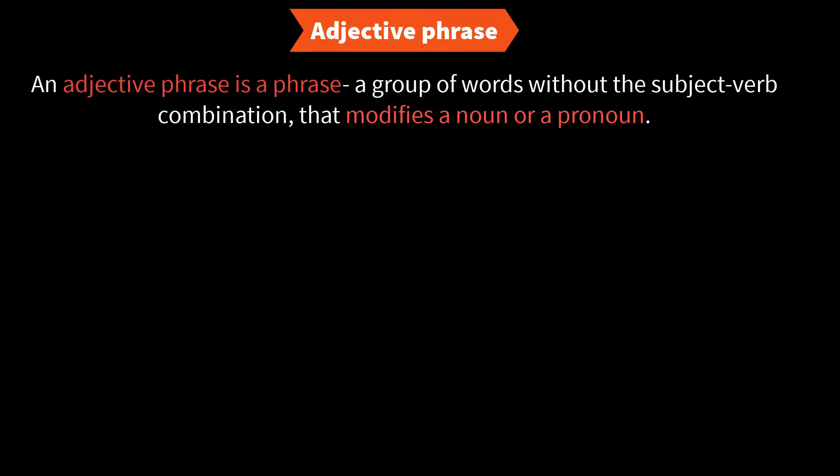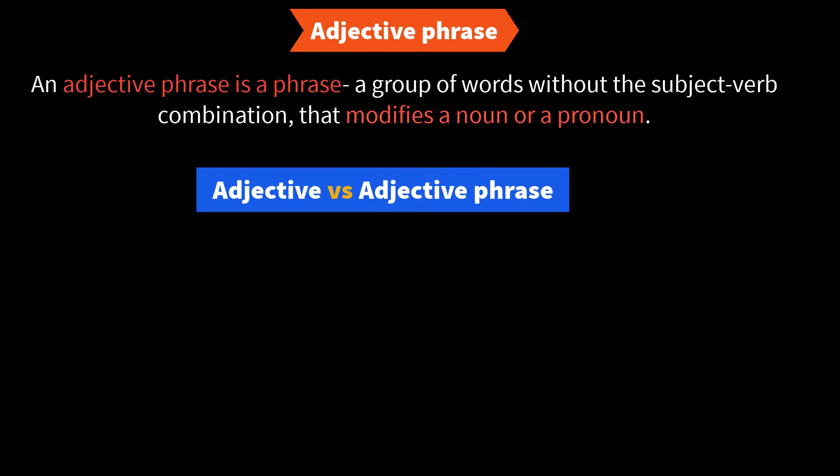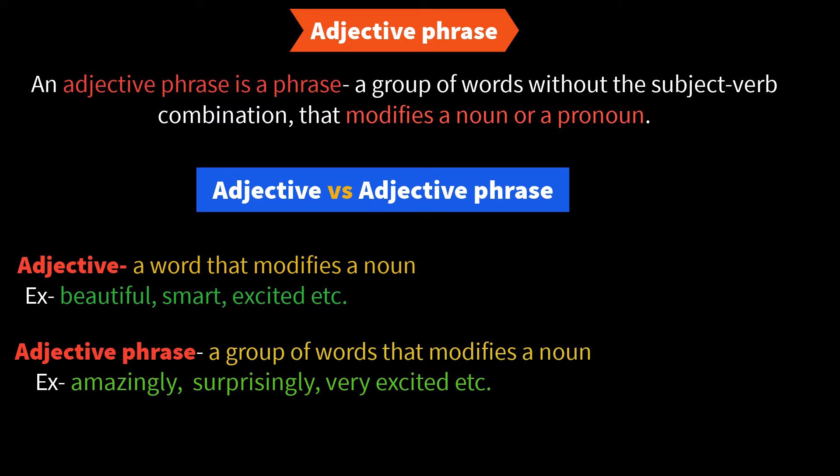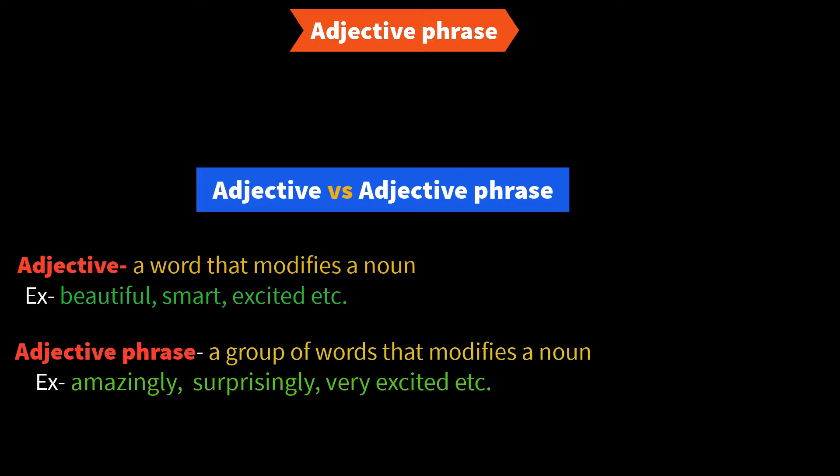An adjective phrase is a phrase — a group of words without having the subject-verb combination — that modifies a noun, giving information about a noun or a pronoun in a sentence. It is no different from an adjective; the only difference is that it uses a group of words to describe or modify the noun in the sentence.